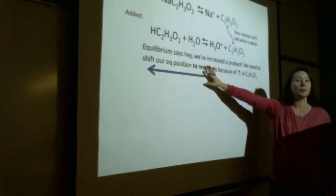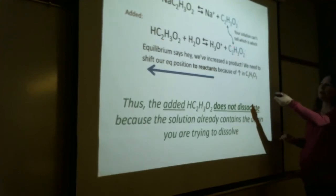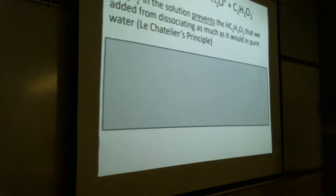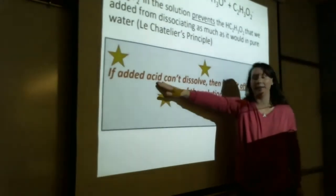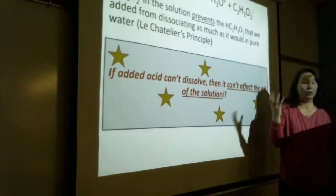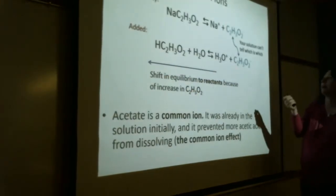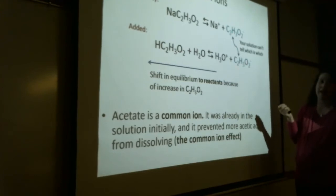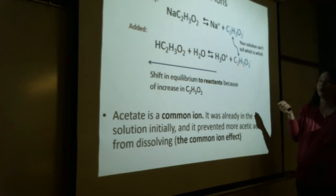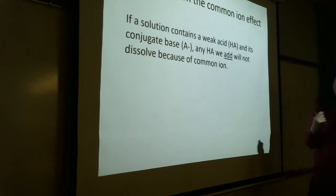Le Chatelier's principle: if I increase the concentration of a product, I shift the equilibrium away from the product toward the reactants. This is the premise of how a buffer works. Any acetate we try to add isn't going to dissolve very well because acetate's already in the beaker. If the acid can't dissolve, it can't affect the pH either. That's a buffer, and these two are called common ions — this is the common ion effect.